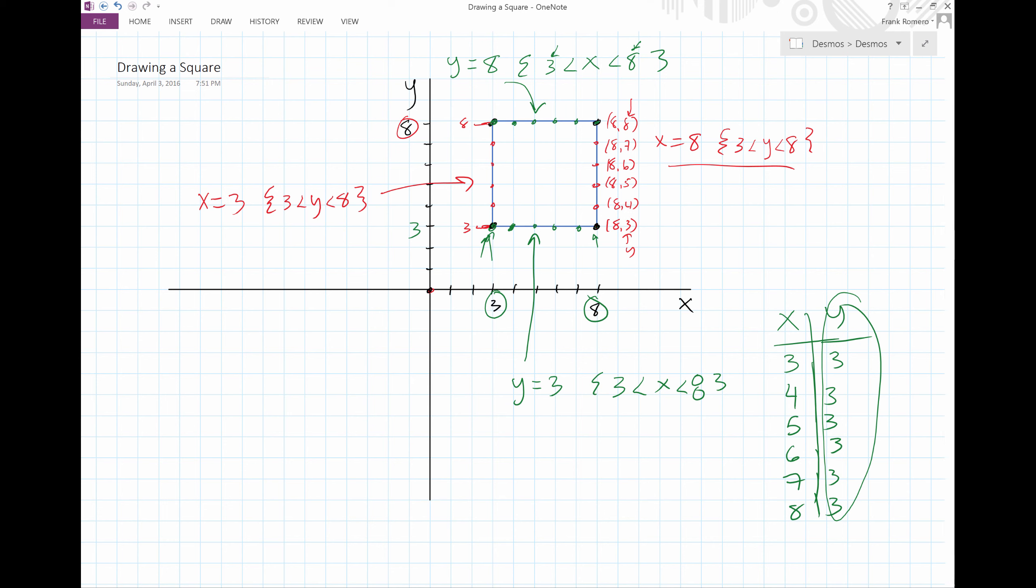So a square has four equations. And it's all based on the Cartesian coordinate system. It's all based on this zero, zero point. That zero, zero point needs to be somewhere in your drawing so that we can draw the square.